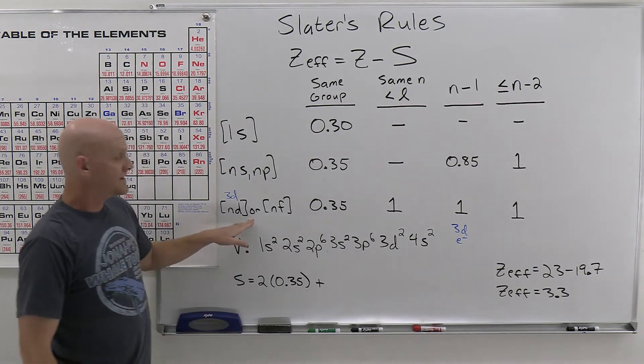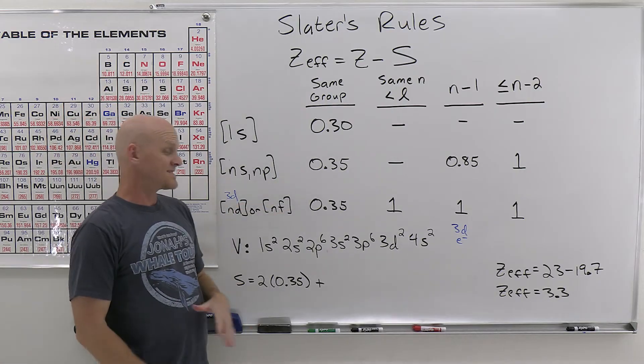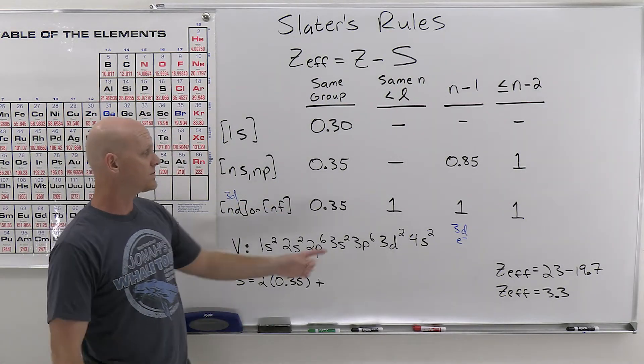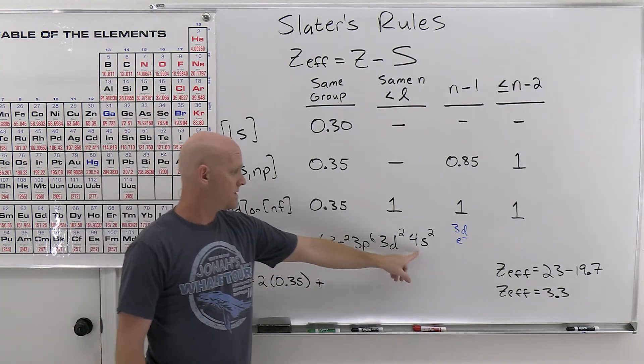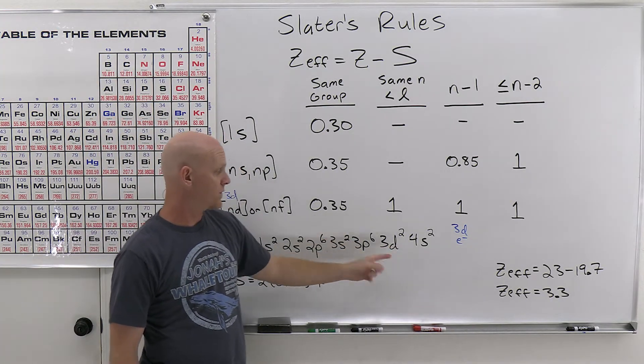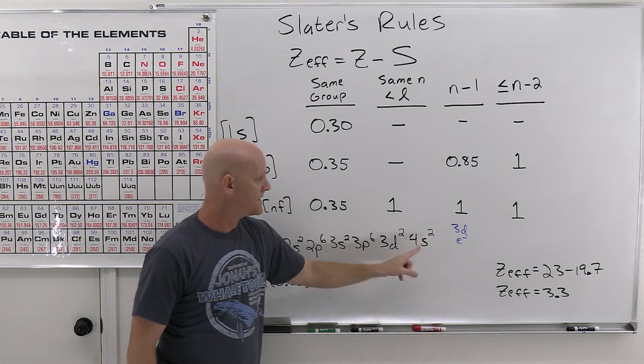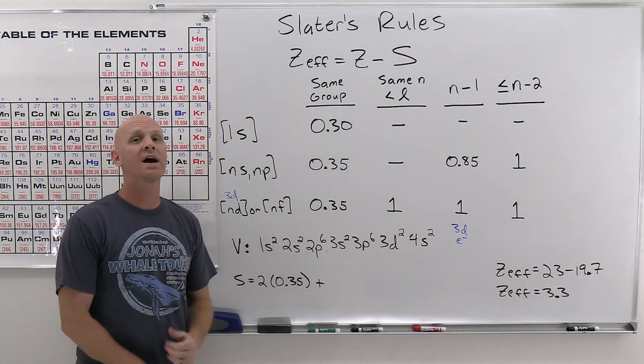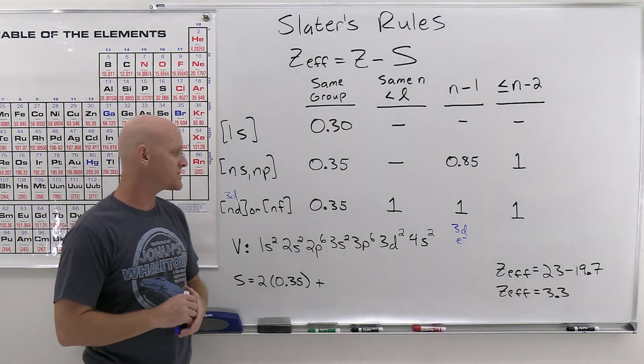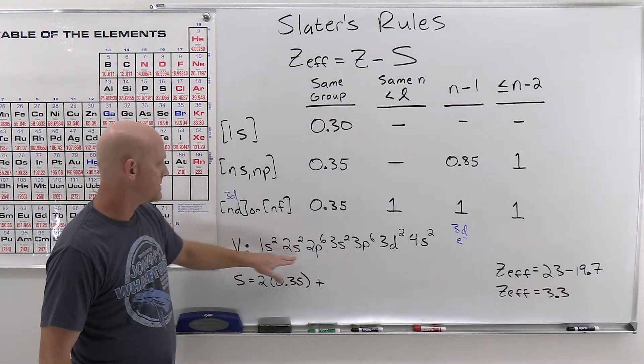All right, for the d electrons or f electrons it would apply, what's nice is that everything else that's closer just contributes 1 and it's nice. So and notice there's no value for like n plus 1. We're in the 3d, we're looking at a 3d. And so for anything higher atomic number, we just ignore them. And they don't really contribute anything, at least not according to Slater's rules. It's only the ones before here.